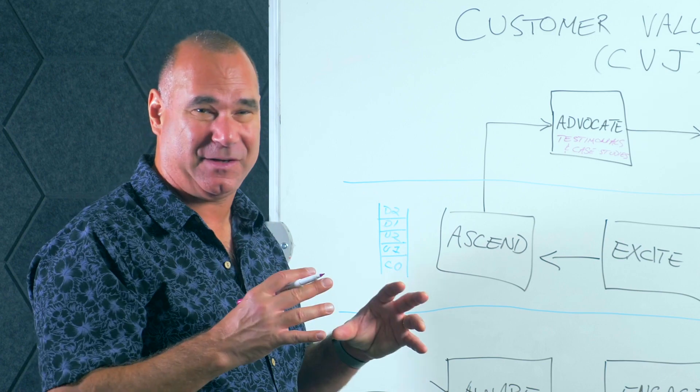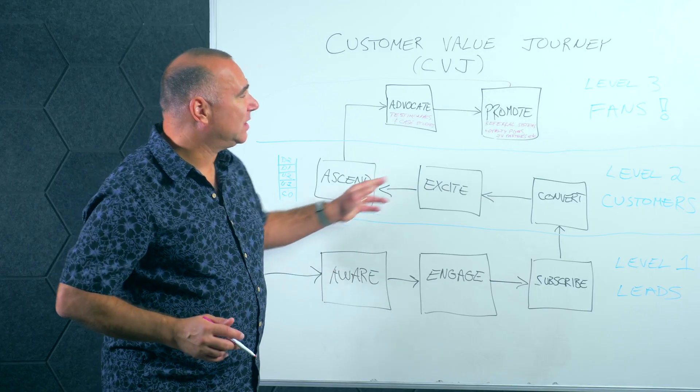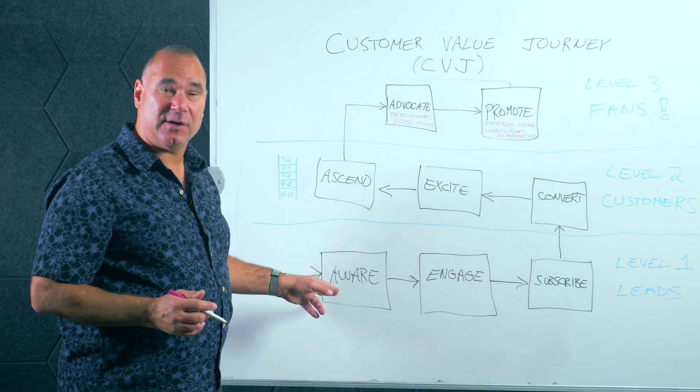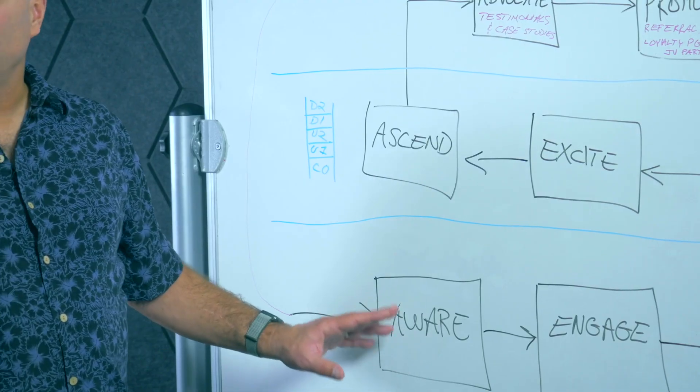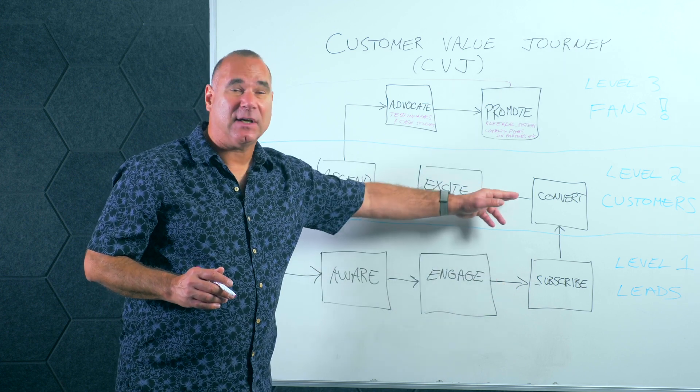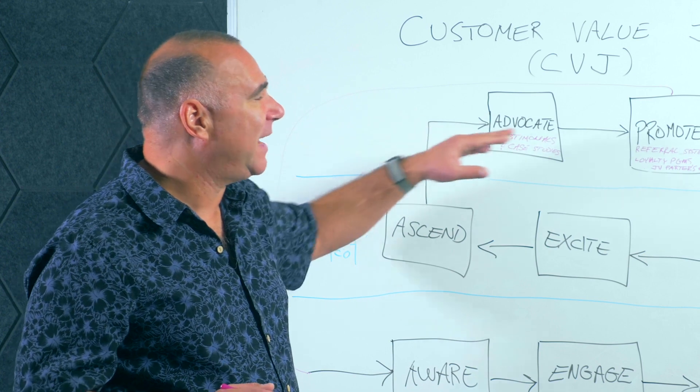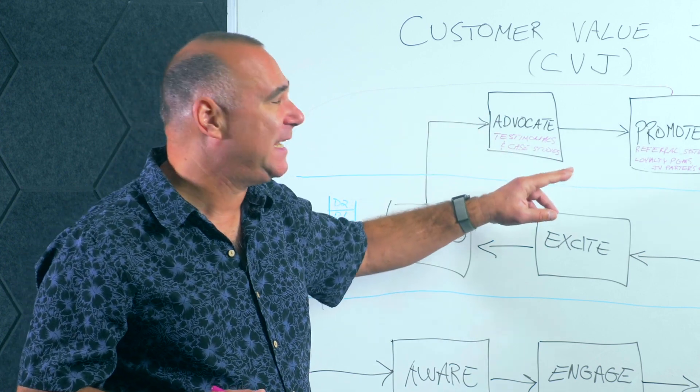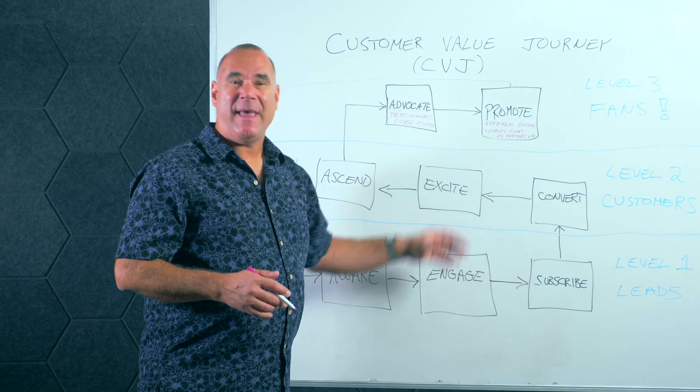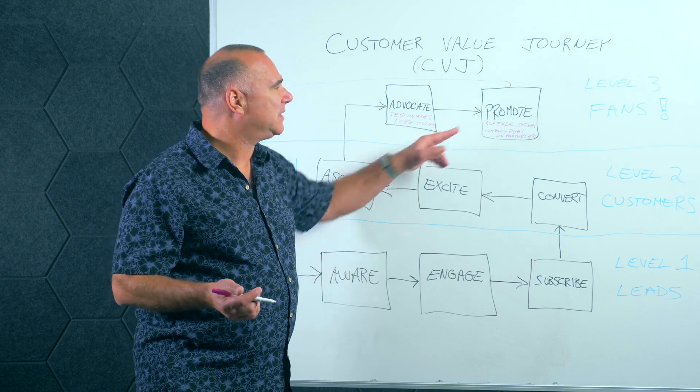We have this looping system that starts at awareness from perfect strangers, converting them into leads, into customers, ascending them through your ascension ladder, becoming raving fans through the Advocate and Promote stages. Once they're promoting you, they're incentivized to do so through loyalty or partner programs, and that all serves to go back and drive awareness. That, ladies and gentlemen, is the three levels of the Customer Value Journey.